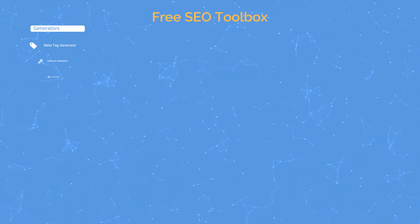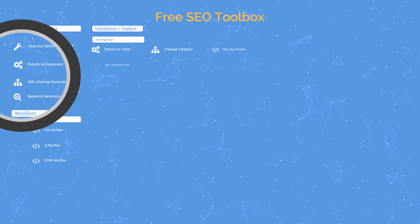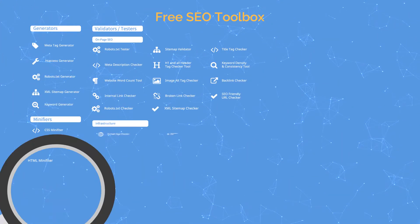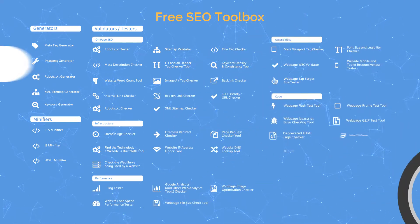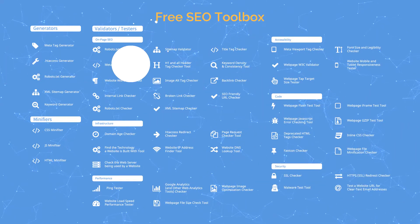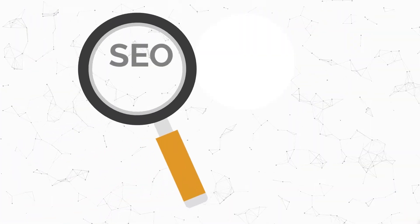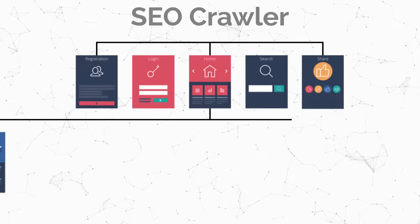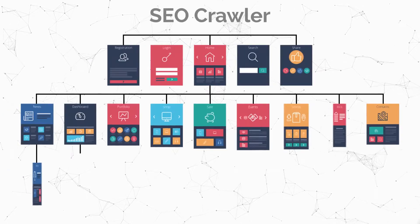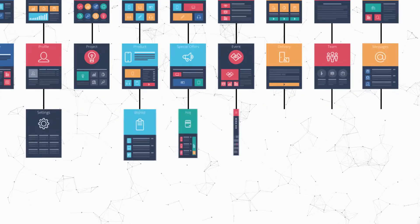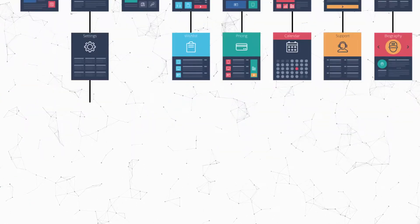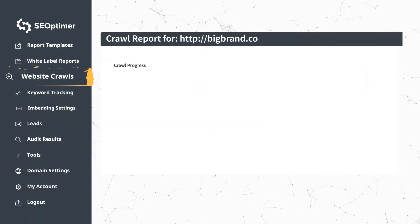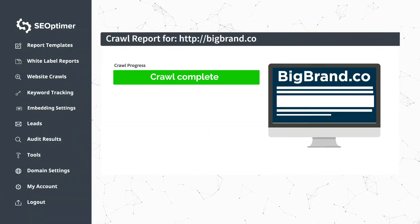SE Optimer also comes with an SEO toolbox jam-packed with over 50 useful SEO tools. The SEO Crawler, one of our more popular tools, crawls every page of your website to find and diagnose problems lurking in unexpected places. No need to wait hours for a crawl to complete.